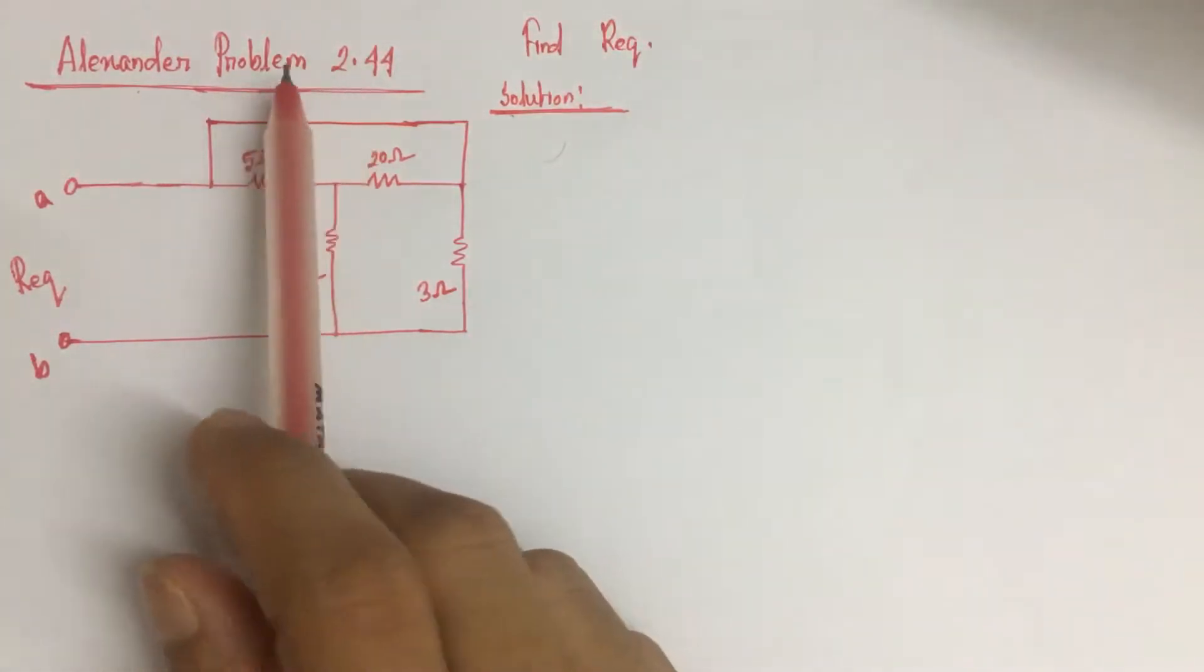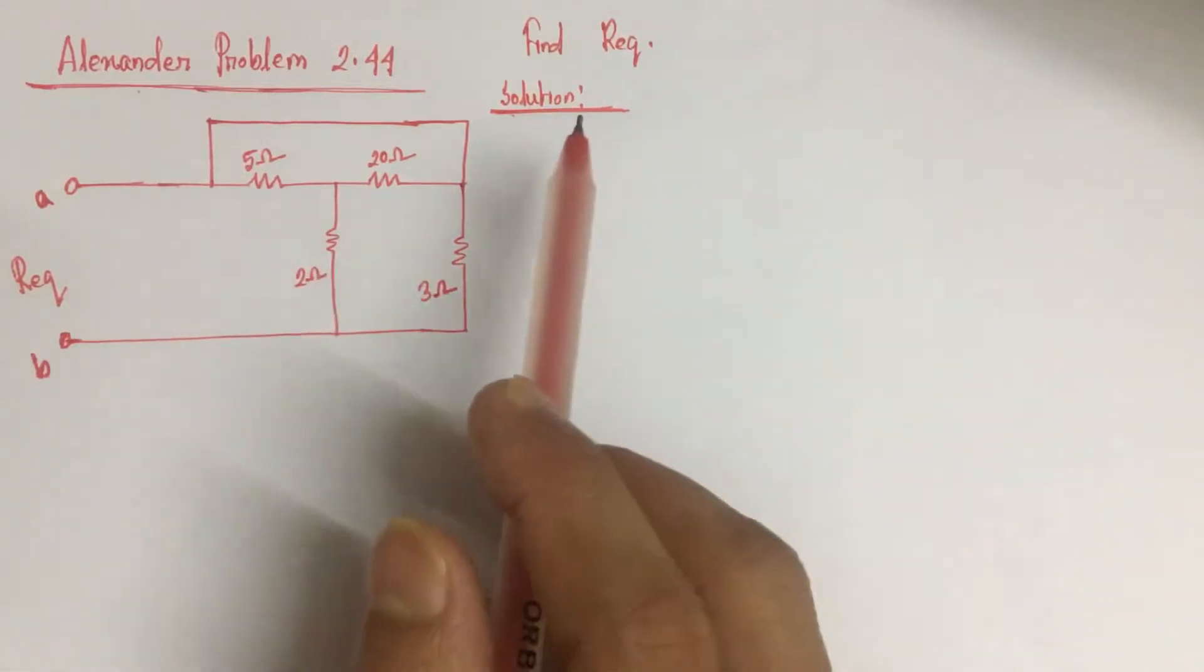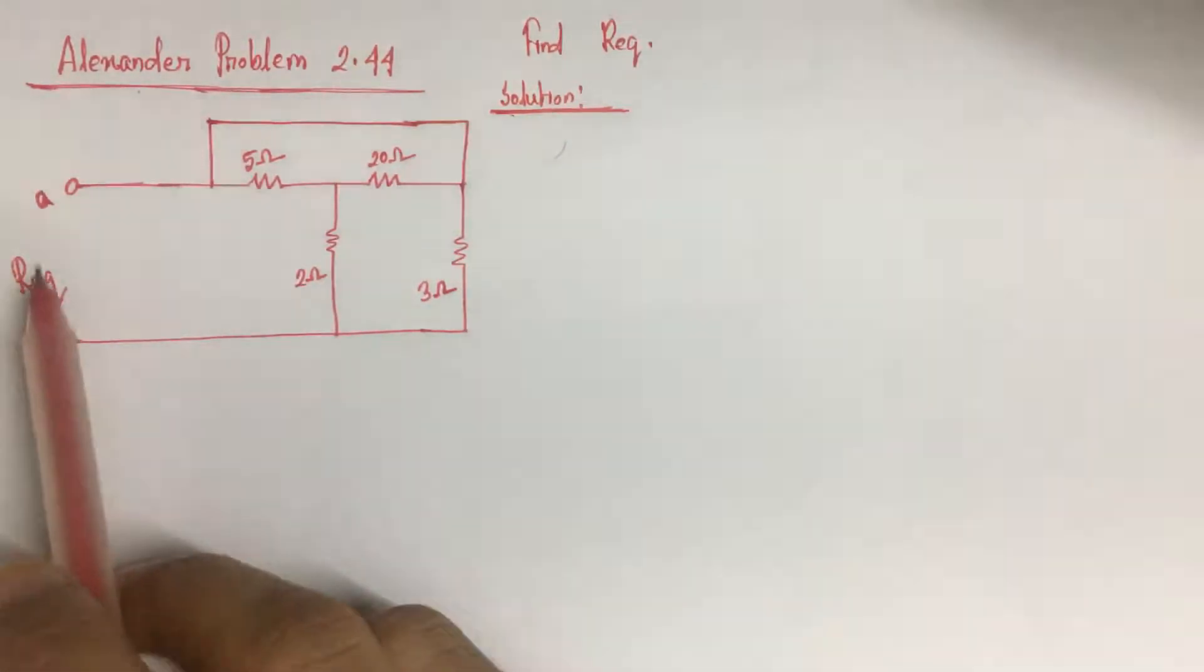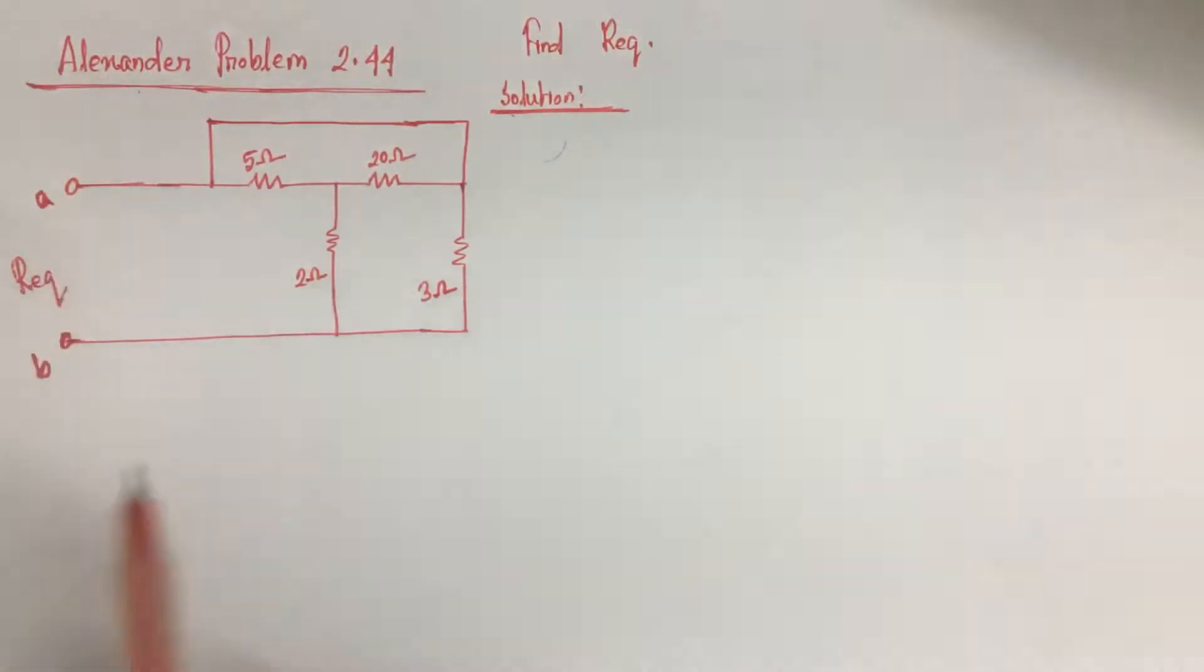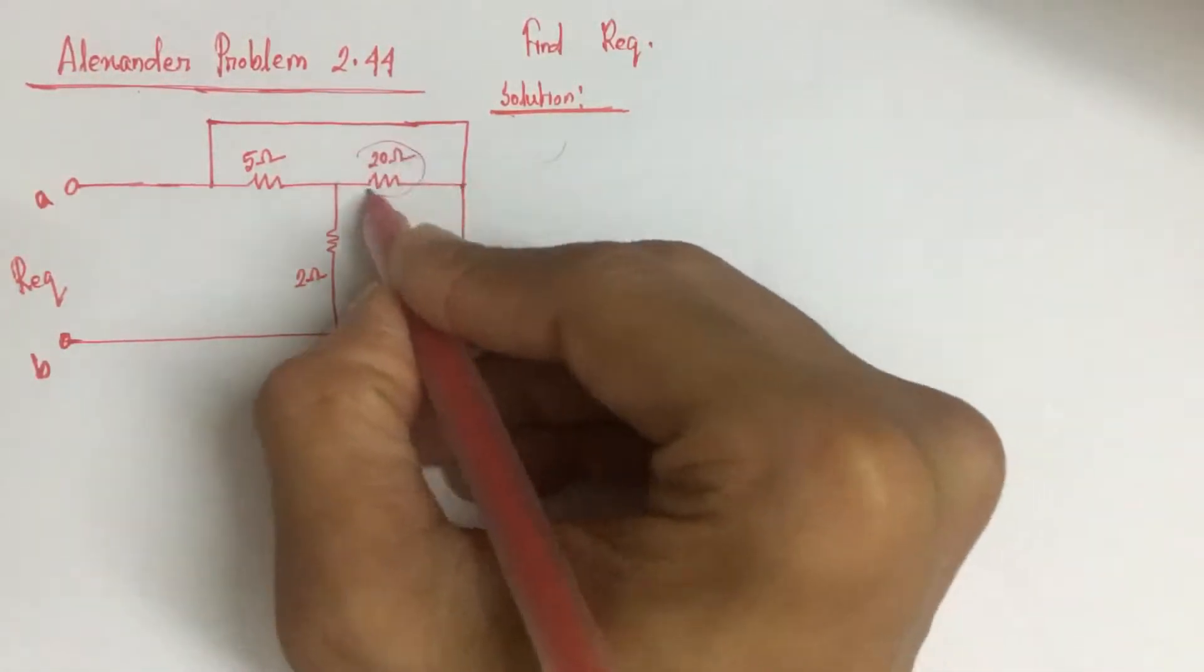Hi viewers, today we will solve problem 2.44 from Alexander. Here we have to identify the equivalent resistance R_EQ between these two points A and B. From the circuit we see that this 22 ohm resistance and 5 ohm resistance are in parallel.